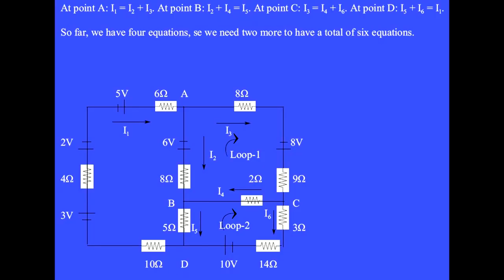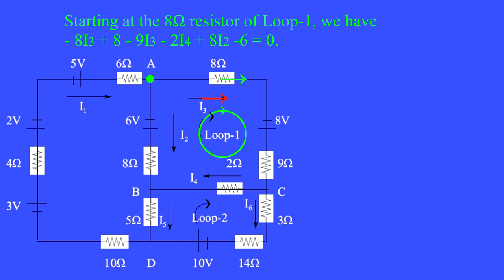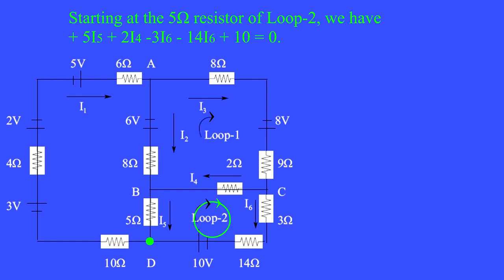This circuit has 6 wires, so it has 6 different currents, I1 through I6. We begin with writing the conservation of charge at points A, B, C, and D. This gives us 4 equations, and then we write 2 conservation of energy loops. Starting at the 8 ohm resistor of loop 1, we have minus 8I3, plus 8, minus 9I3, minus 2I4, plus 8I2, minus 6 equals 0. Starting at the 5 ohm resistor of loop 2, we have plus 5I5, plus 2I4, minus 3I6, minus 14I6, plus 10 equals 0.